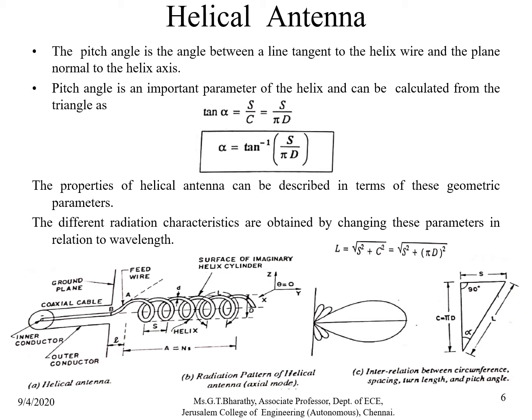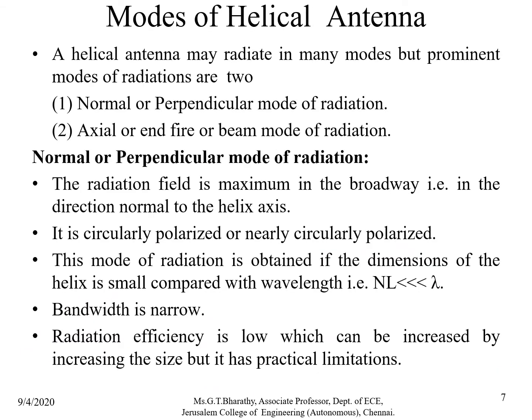The radiation characteristics of a helical antenna are obtained by changing these geometric parameters with respect to the wavelength. The turn length L is given by L = √(S² + C²), which simplifies to L = √(S² + (πD)²). Helical antennas can radiate in two modes: (1) the normal or perpendicular mode of radiation, and (2) the axial, end-fire, or beam mode of radiation.